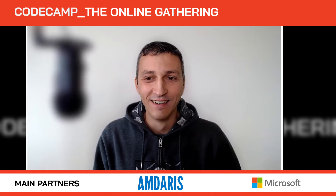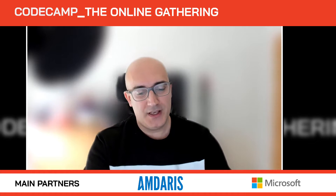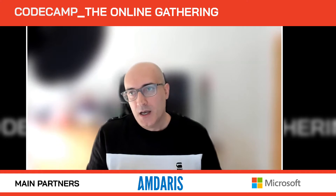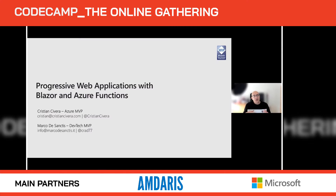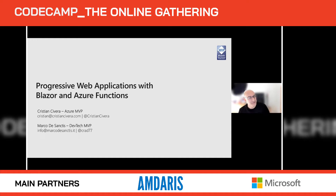We're going to talk about probably one of the most cool technologies Microsoft has been working on today, which is Blazor. We're going to show you how you can build a progressive web application that uses Blazor on the front end and Azure Functions on the back end. Super cool stuff, guys. Stay tuned. If you're not acquainted with Blazor and haven't had the chance to use it yet, don't worry. We'll try to keep things simple, but I'm pretty sure even those who are more experienced will have something new to learn.